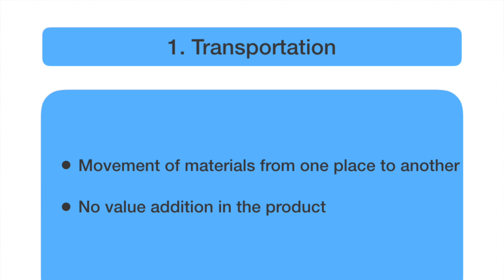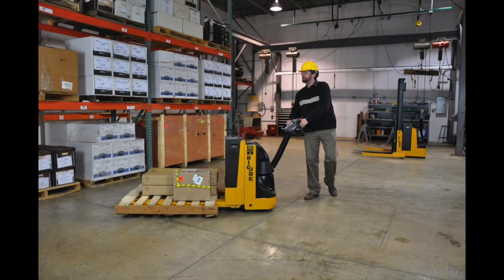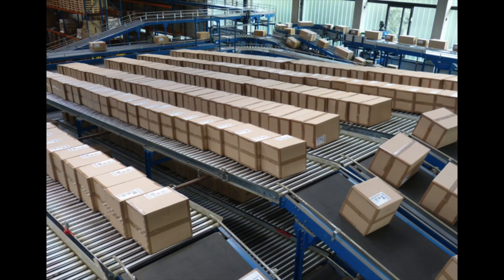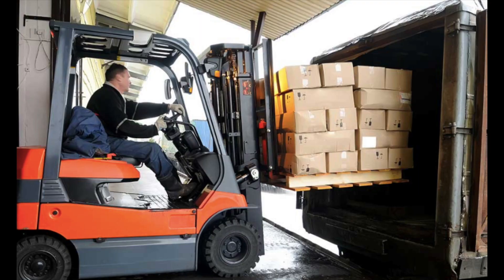Whenever we are moving the product from one place to another, it's called transportation. During this process, the product just changes location — there is no real value addition that happens in the product. That's why it's called a waste. For example, components are moved from the raw material stores to the production area, then to finished goods storage, and from there to the delivery yard. There is no real value addition, which is why it's called a waste.